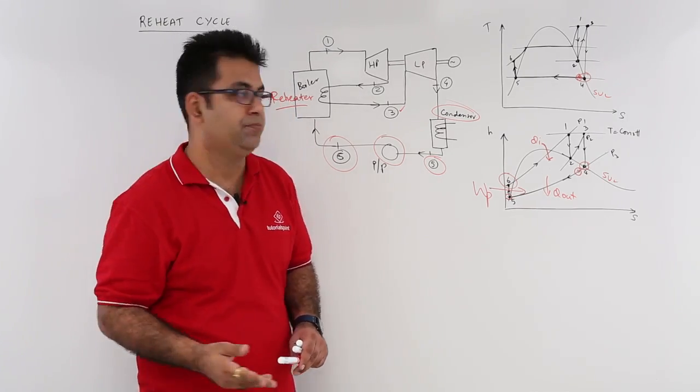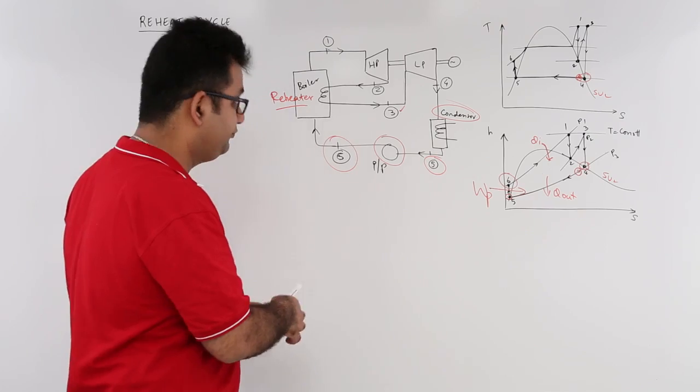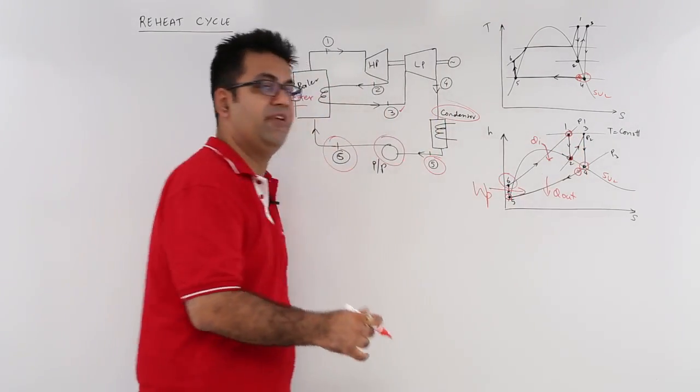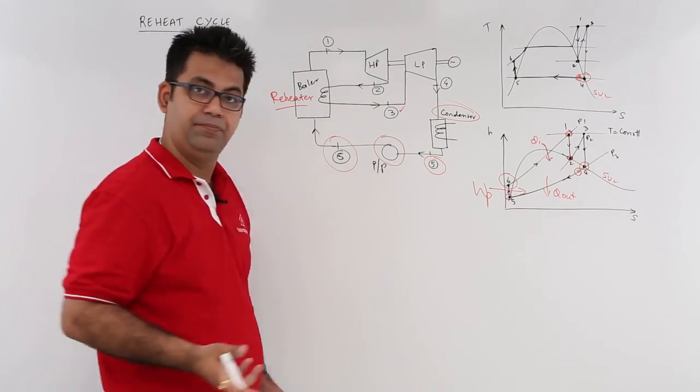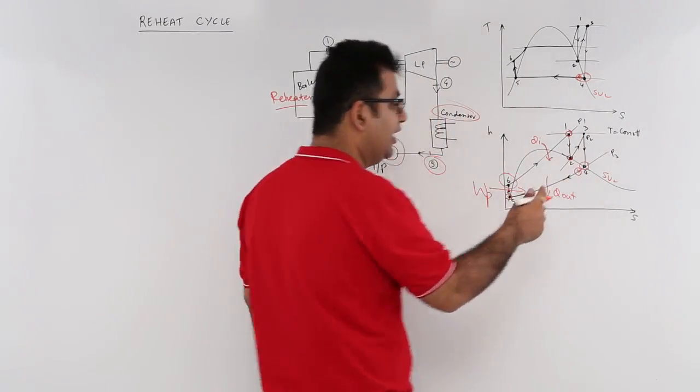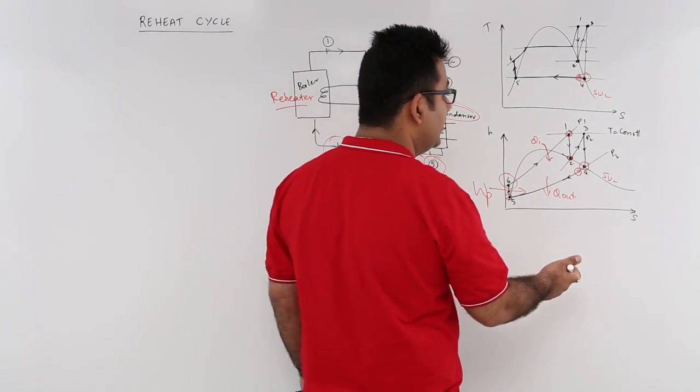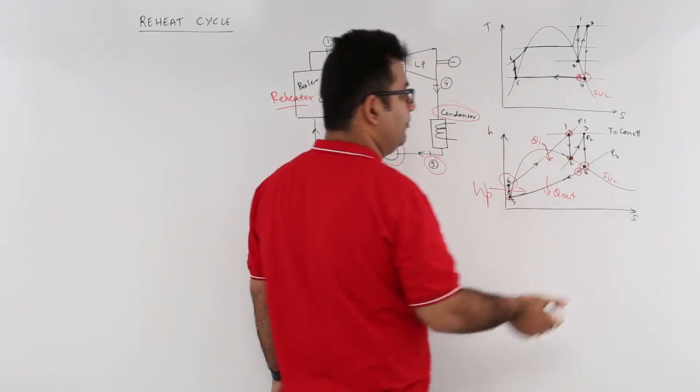This is what it does—basically it gets rid of the moisture content after expansion. If you look at this, 1 to 2 is the work output from the first turbine. Then 2 to 3 is again heat addition. You are adding heat, increasing the temperature at constant pressure.